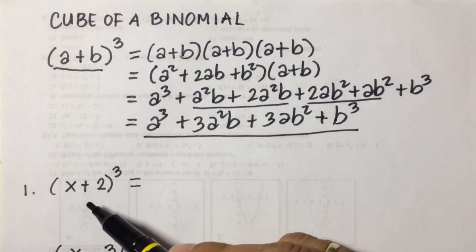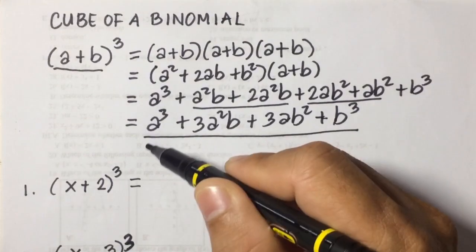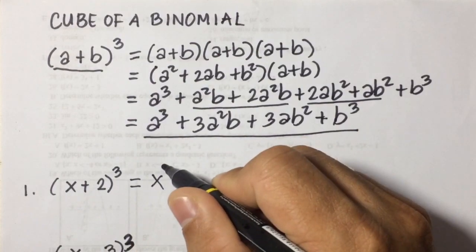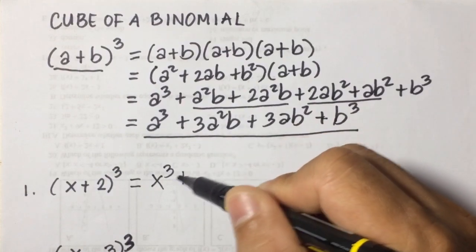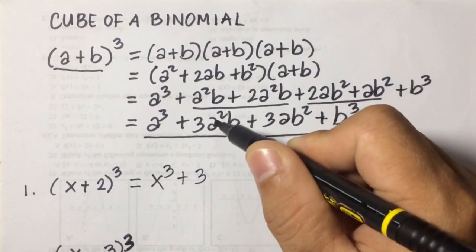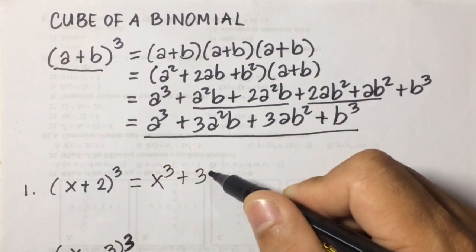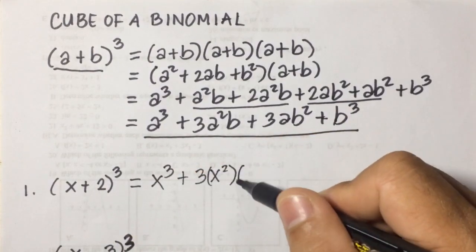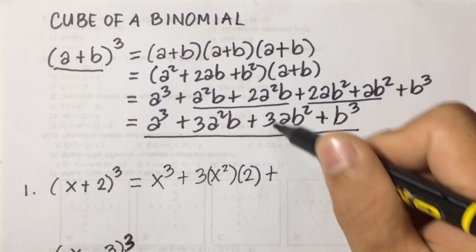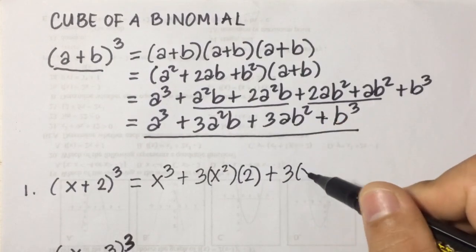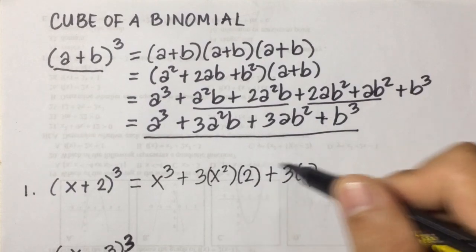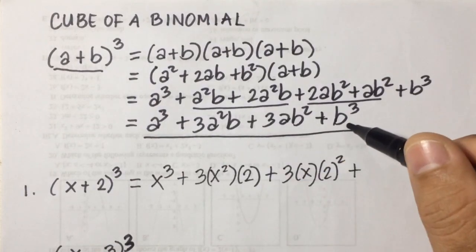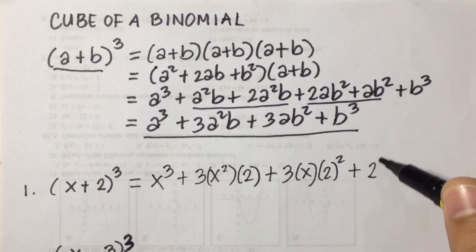Example number one: quantity of x plus 2 cubed. For the first term of the answer, we cube the first term x, giving x cubed. The second term is 3 times x squared times the second term 2. The third term is 3 times x times 2 squared. The last term is 2 cubed.